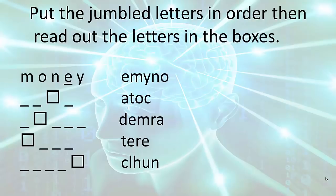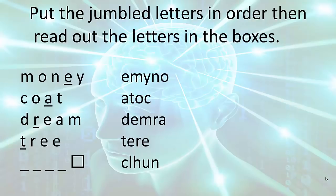The first word is money. And the letter is e. The second word is coat. And the letter is a. The third word is dream. And the letter is r. The fourth word is tree. And the letter is t. So, we see the letters are e, a, r, t. And the last word is lunch. And the missing letters are all shown now. And we can say e, a, r, t, h. And the missing letters form the word earth.